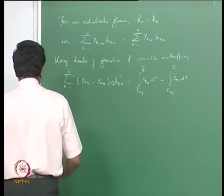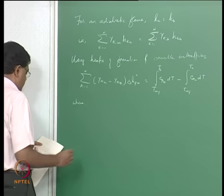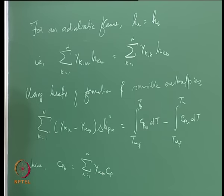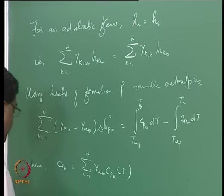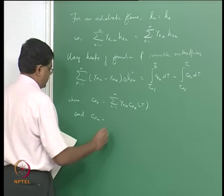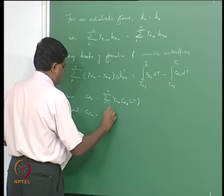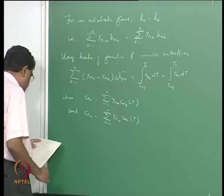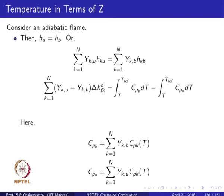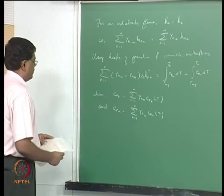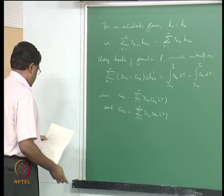C_PB equals sigma k equals 1 to n of y_kb times C_PK(T), and C_PU equals sigma k equals 1 to n of y_ku times C_PK(T). We want to find what this expression gives, and since we have already looked at how to compute the products, we can do the same thing here.